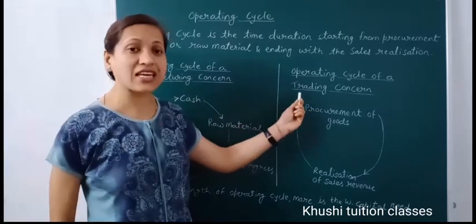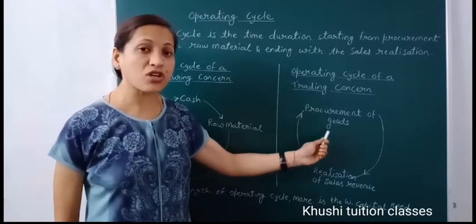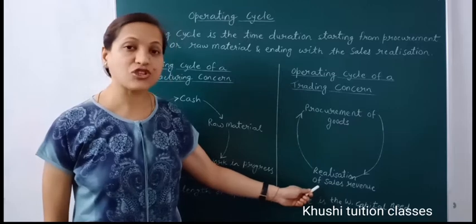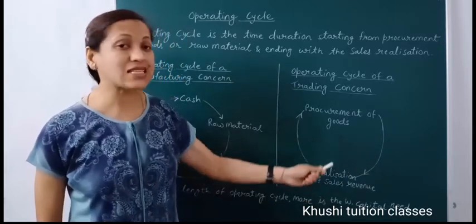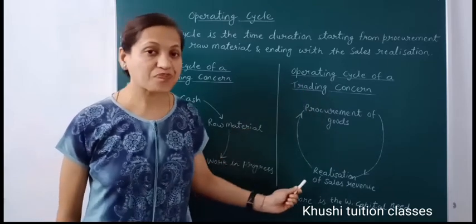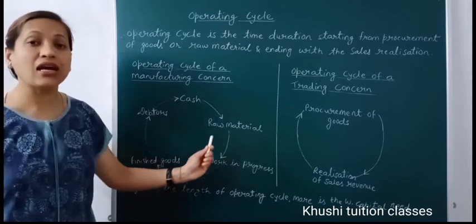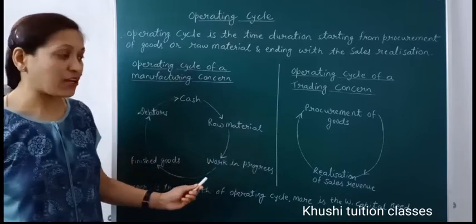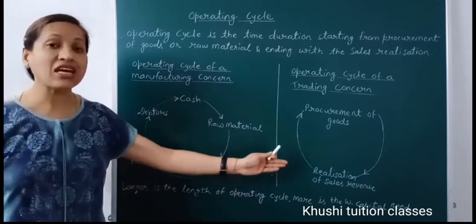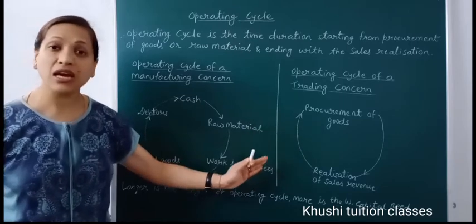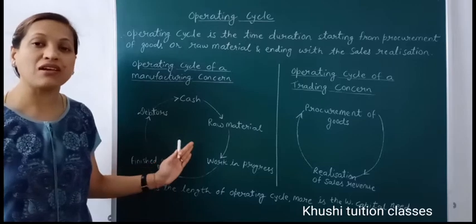Now we see the operating cycle of a trading concern. A trading concern — retailers — purchases goods and sells them as-is. So there is procurement of goods, finished goods inventory, and they sell it to get realization of sales revenue. If we sell on credit, debtors are generated and then cash is realized from debtors. This is the length of a trading concern's operating cycle. The longer the operating cycle, the more is the working capital need. Trading concerns have a shorter operating cycle so they need less working capital, while manufacturing organizations have a longer operating cycle so they need more working capital.